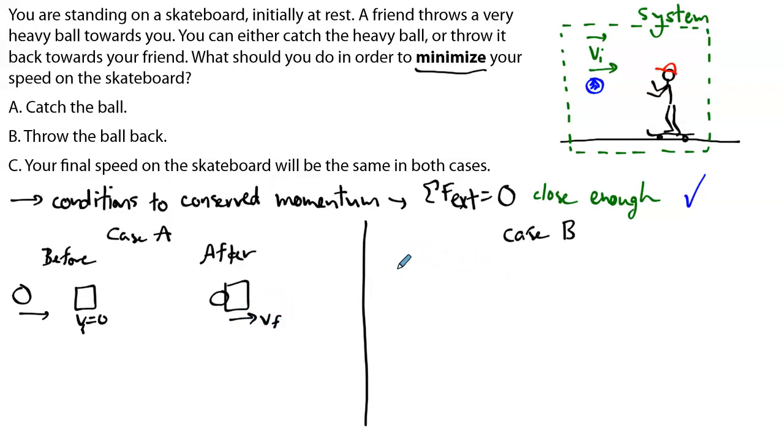While in the second case, the before picture is indeed the same. We'll have the ball moving, the skater initially at rest. And the after picture will be different this time, because after the collision we still have the skater moving to the right of the picture. However, the ball will be moving towards the left. That's the big difference.